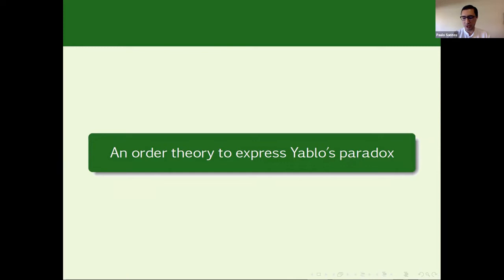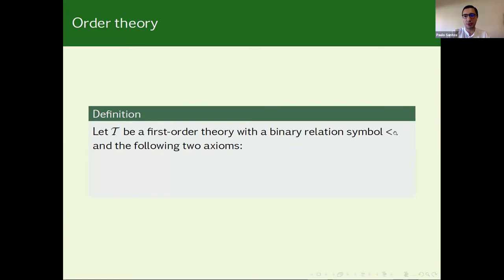But let us construct step-by-step this approach. And for that, I'm going to express Yablo's paradox in an order theory. The theory is rather simple. So it is a first order theory with a binary relation symbol that I'm going to call small. And the following two axioms. The first one expresses the transitivity of this relation. If X is smaller than Y and Y smaller than Z, then X smaller than Z. And the second axiom expresses a weak form of infinity in the sense that for all X, there is a Y above the X. So there is a Y greater than X. Clearly, this theory is consistent, by the way.